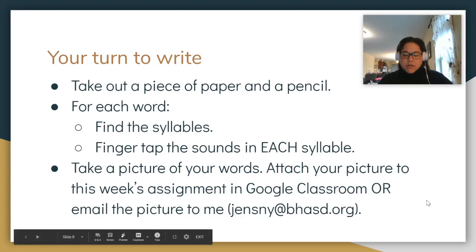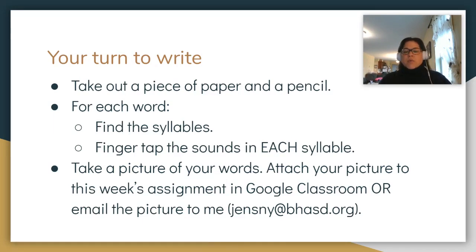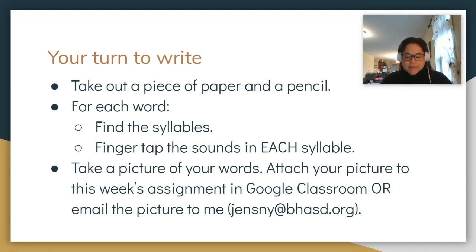Now it's your turn to write. You can use the same piece of paper — the bottom or the back. I'm going to say a word and use it in a sentence; you need to write the word on your own. Clap the syllables, finger tap each syllable — and we're not going to check these together. You'll turn this in to me. We've got six of them. Number one: 'velvet' — I wore a velvet dress to the holiday play. Next word: 'catnip' — we give our cat some catnip for a special treat.